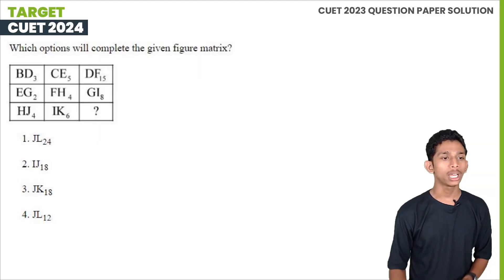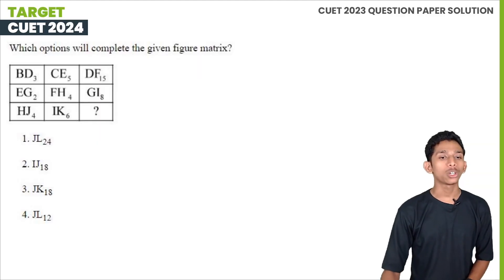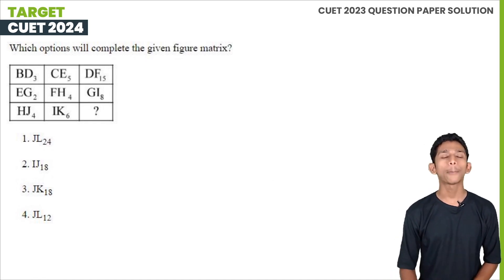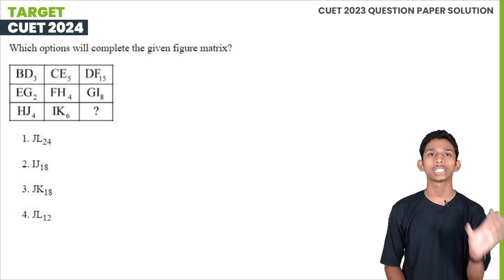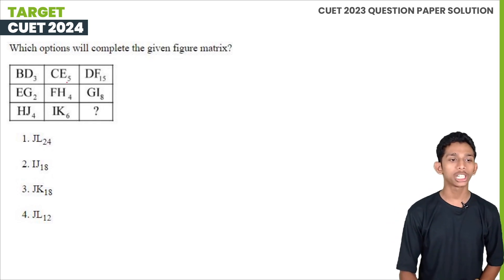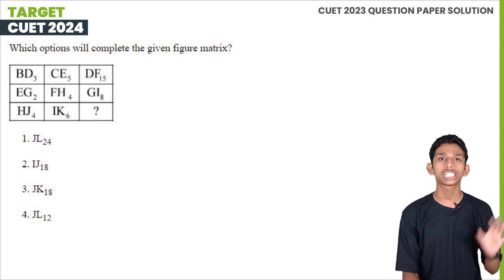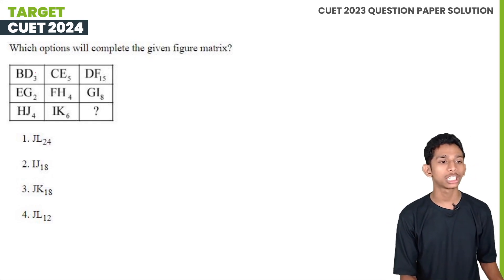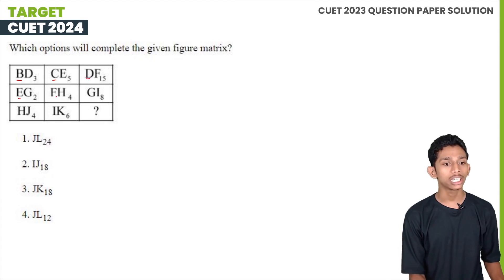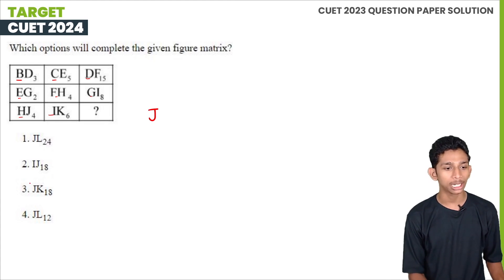Next question: which option will complete the given figure matrix? The figure matrix is complete. The first term is B, C, D, E, F, G, H, I. The next term is J. We can add this option.